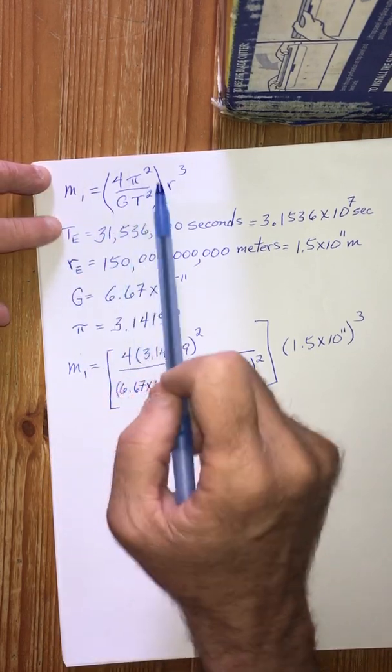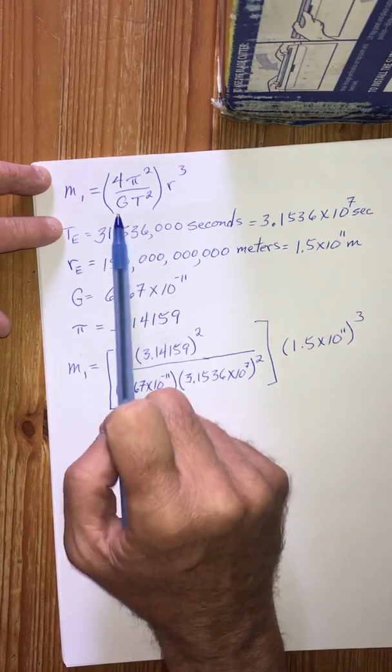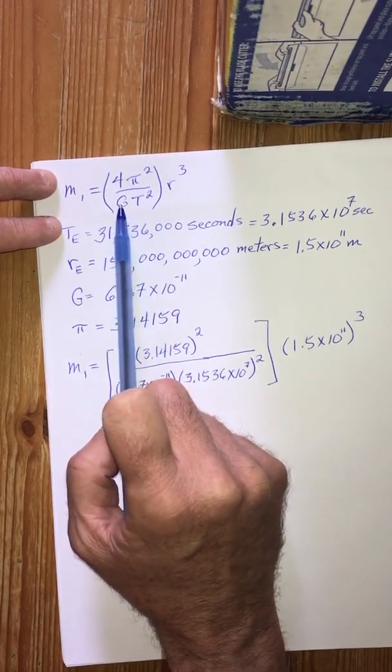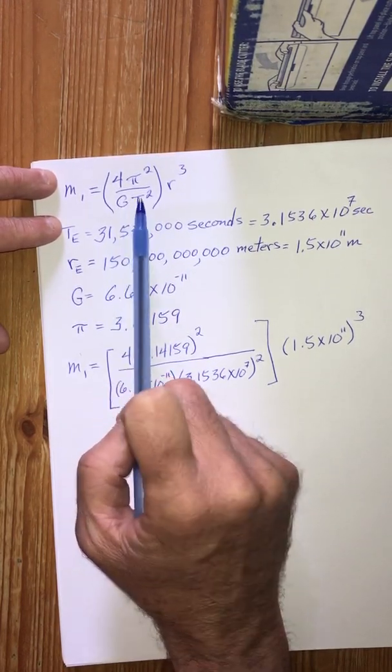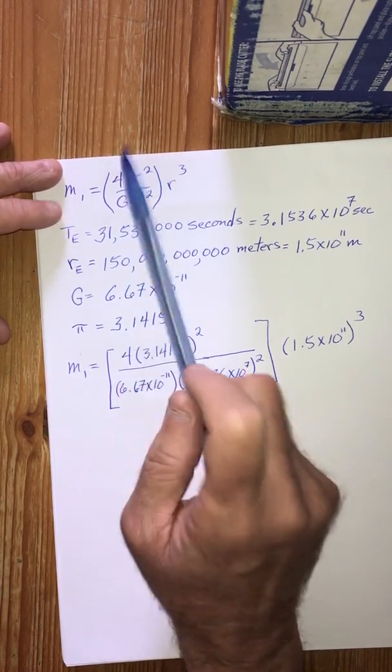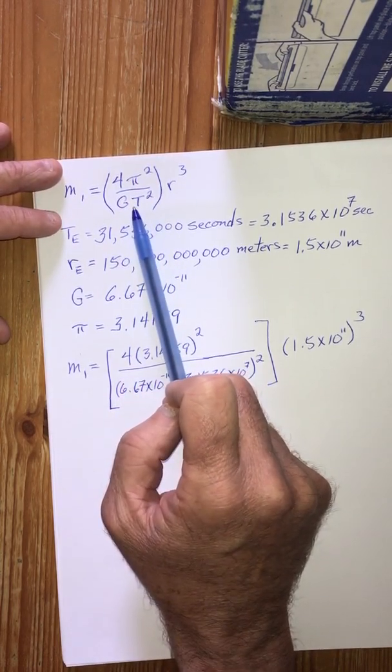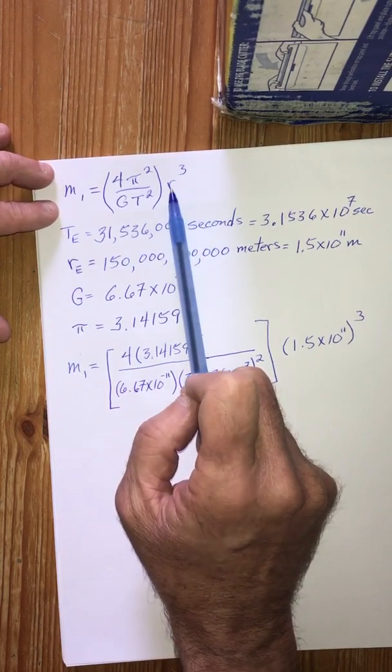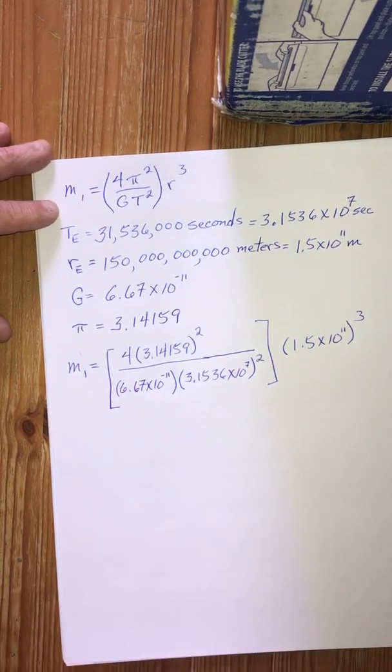We have the expression from Kepler's Third Law that tells us what the mass of the central star is in a solar system. And to calculate this we need these numbers: pi, capital G the universal gravitational constant, the period T squared of one of the planets, and the distance R from the star to that planet cubed.